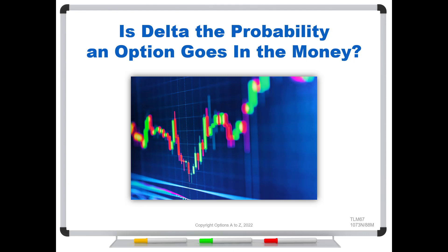A question that I get a lot from traders is about this connection with Delta being the probability for an option to go in the money. That's because depending on what you read out there, whether it's in books or on websites, some people say that Delta is the probability for an option to go in the money.